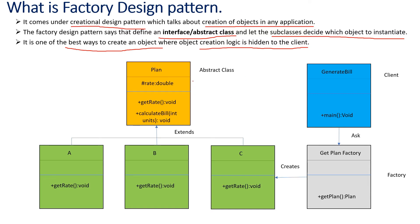Let me explain the factory design pattern using a UML diagram. Here, this part is an abstract class. We have defined an abstract class whose class name is Plan. It has a data member called rate — representing the rates — and it has two methods: get rate and calculate bill. When we go through the code we'll understand what these methods do, but for the UML diagram you can assume there is an abstract class with a data member and two methods.